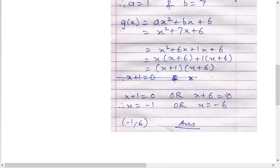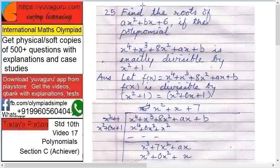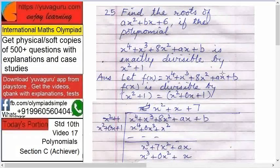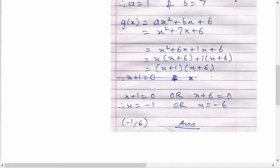It means either x plus 1 equals to 0 or x plus 6 equals to 0. Therefore either x equals to minus 1 or x equals to minus 6. So minus 1 comma minus 6 are the values of x. That's what is required: find the roots. Roots are minus 1 and minus 6.